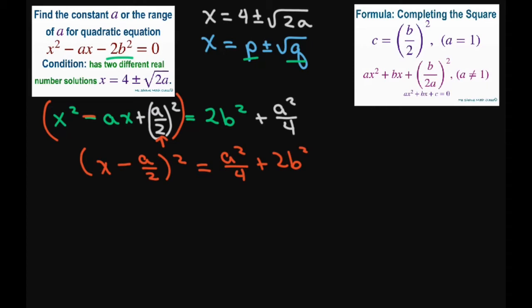Now for the right hand side I'm going to go ahead and get the common denominator as 4. So that's going to be A squared plus, if I have a 4 here I have to multiply this by 4, so it's going to be 8b squared.